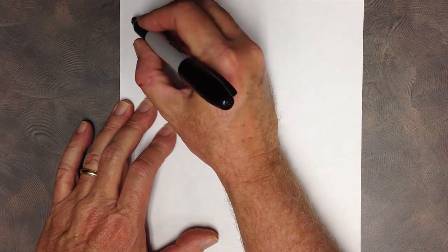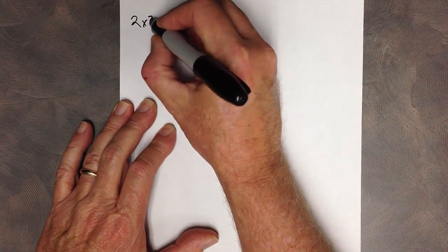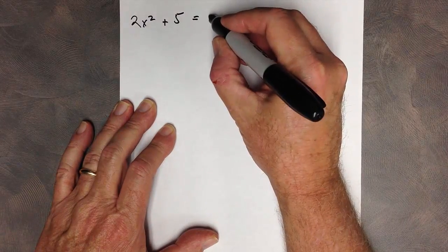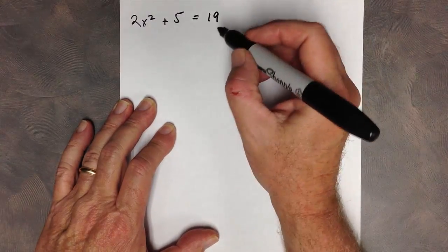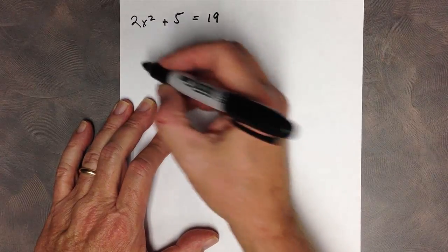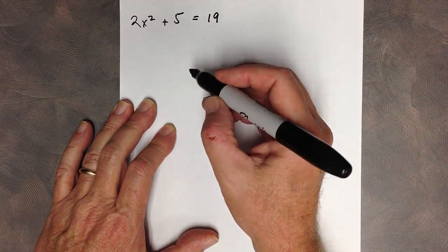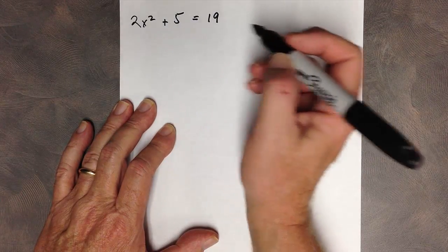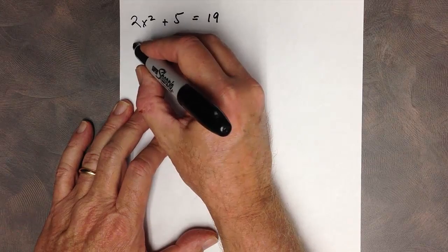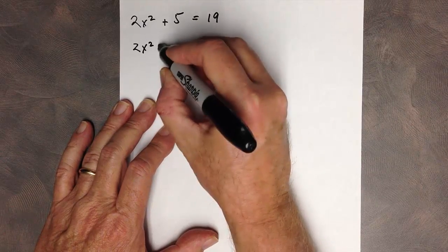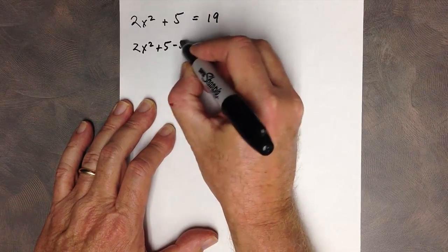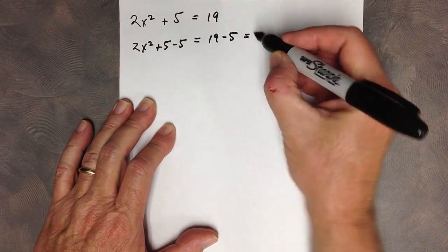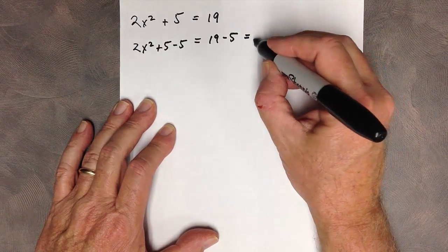if I have an equation 2x² + 5 = 19. I should be able to simplify that equation by first moving the 5 to the other side, subtracting the 5 from both sides of the equation: 2x² + 5 - 5 = 19 - 5, which would be 14.